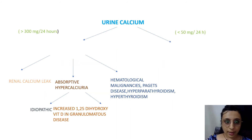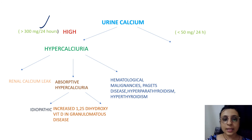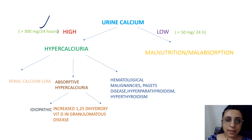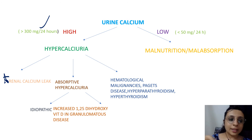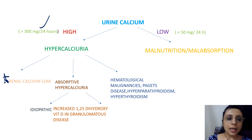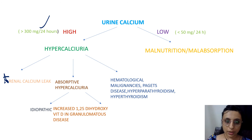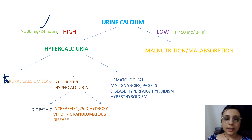Urine calcium is the third test. If greater than 300 mg per 24 hours, that is hypercalciuria — rule out renal calcium leak, absorptive hypercalciuria, and hematological malignancy. Renal calcium leak is due to defective reabsorption of calcium in the renal tubules, resulting in increased urine calcium with normal serum calcium. Absorptive hypercalciuria can be due to increased 1,25-dihydroxyvitamin D in granulomatous diseases or may be idiopathic. If urine calcium is low — less than 50 mg per 24 hours — rule out malnutrition or malabsorption.